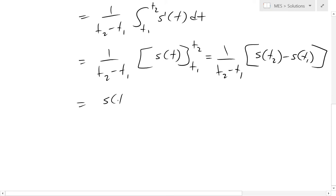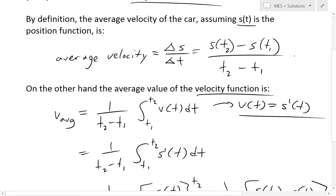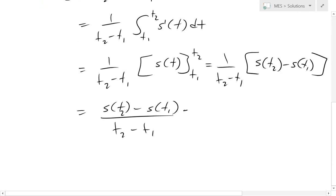I'll just write it neater. So s(t2) minus s(t1) divided by t2 minus t1, and there you have this exact same thing as this one right here. So this equals to our average velocity.